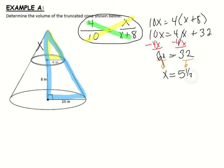You could either use a mixed number, or if you prefer, you could use 5.3. So we therefore know the height of the small cone is 5.3. The height of the large cone is 8 plus 5.3, which is 13.3.